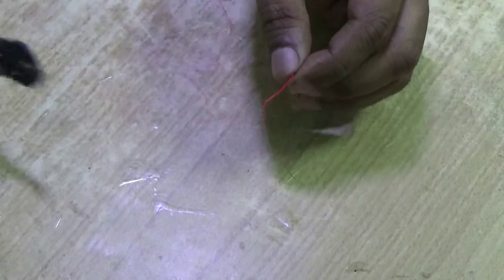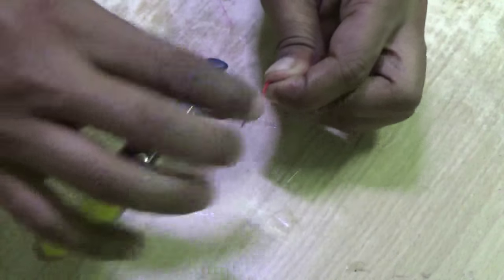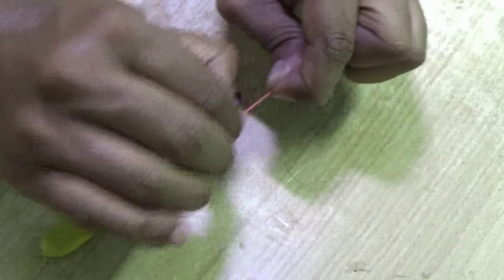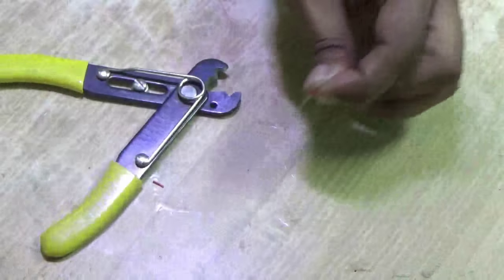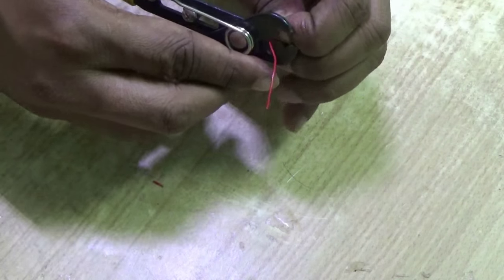Use a wire stripper to take the jacket out. See, the multiple wires are there. Do the same on the other side.